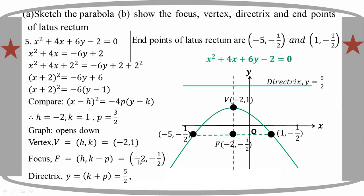Focus is minus 2, minus 1 by 2, equal to h. The directrix y equals 5 by 2, equal to 2.5. So x squared plus 4x plus 6y minus 2 equals 0, and you can see that the graph is now described.